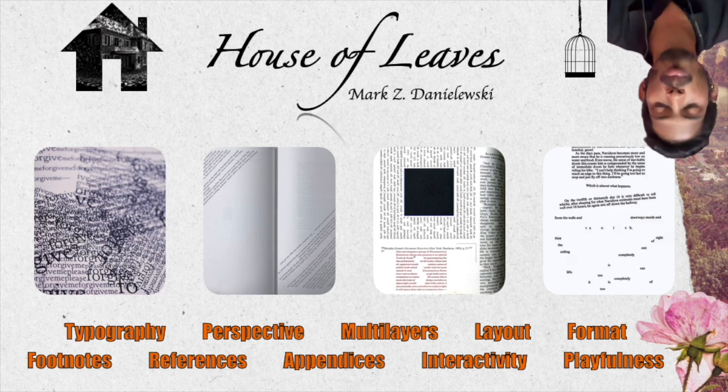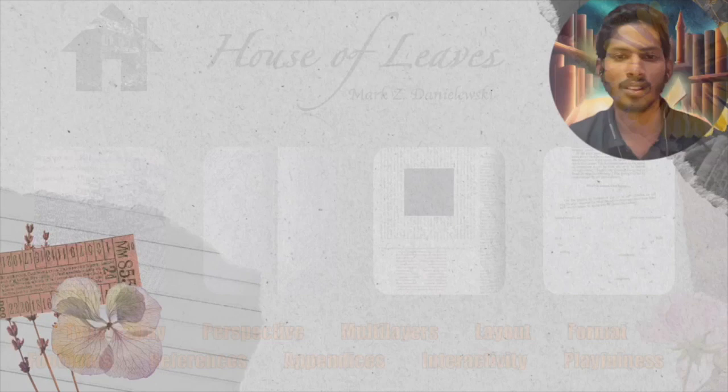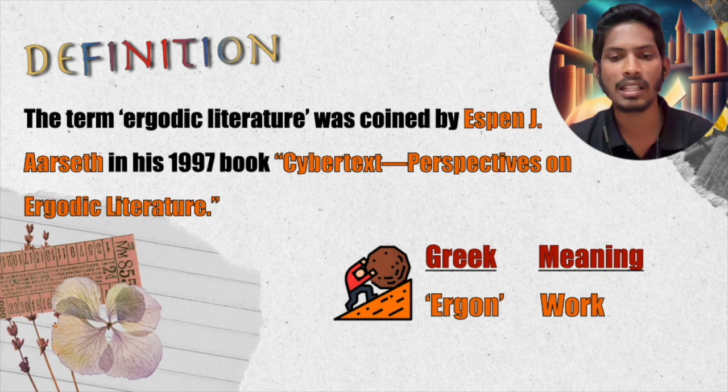As you've figured out, these are some of the components of ergodic literature, including typography, perspective, layers, layout, format, footnotes, and so on. Let's head to the textbook definition of ergodic literature.